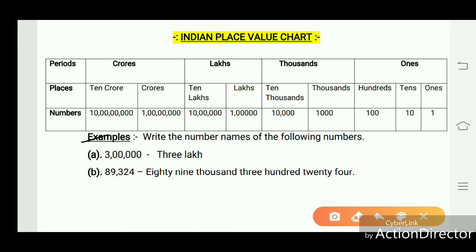Examples — write the number names of the following numbers. We take help of this chart. Example A: 3,00,000. This number is read as 3 lakh in the Indian system, because lakh has 5 zeros.